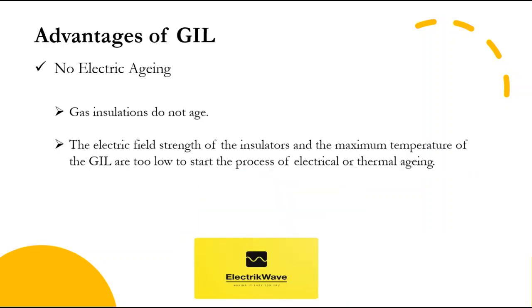GIL has no electric aging. Gas insulations do not age — the best example is an overhead line with ambient air as insulating gas. The electric field strength of the insulators and the maximum temperature of the GIL are too low to start the process of electrical or thermal aging. This has been proven using long-term measurements in independent laboratories and by extensive experience with the equipment in the network. The first GIL installations have been in operation since 1974, with results reported by CIGRE.